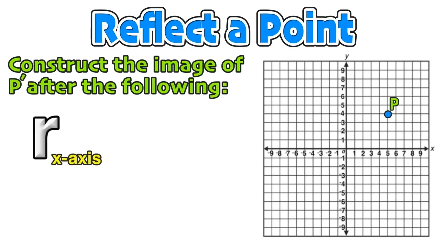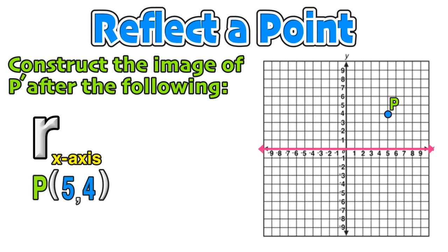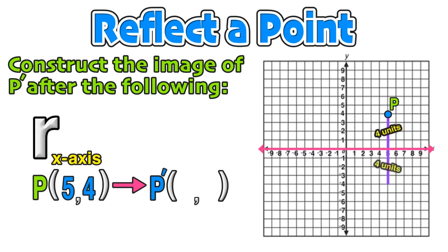For our first example, we will be reflecting a point. Notice that our line of symmetry is the x-axis — the line we are going to be reflecting point P with coordinates (5, 4) across. To find the coordinates of the image P', we will count how many units point P is away from the line of symmetry, in this case 4 units. Next, we will count the same number of units on the other side of the line of symmetry — again, 4 units. Now we have the location of P' with coordinates (5, negative 4).